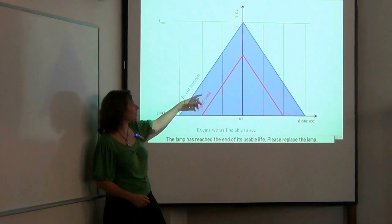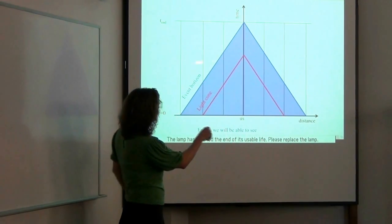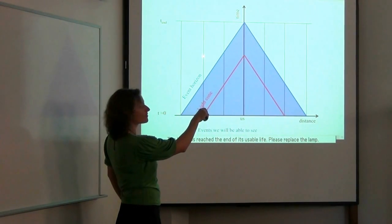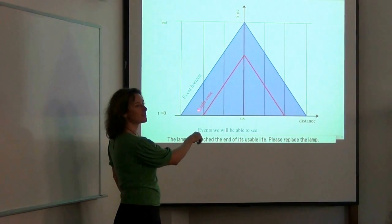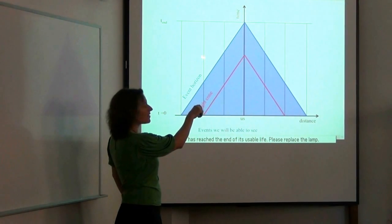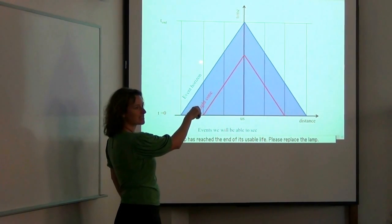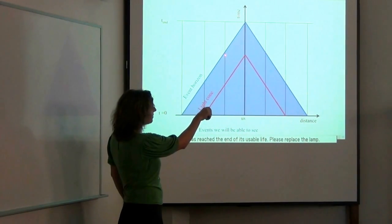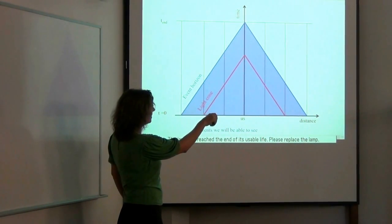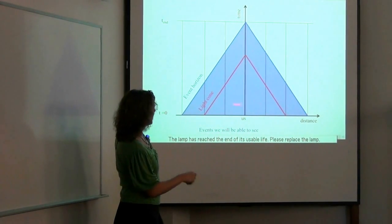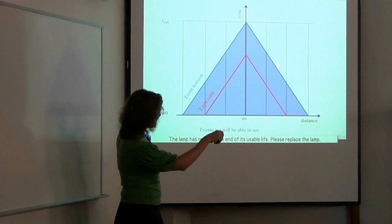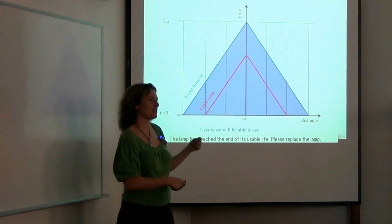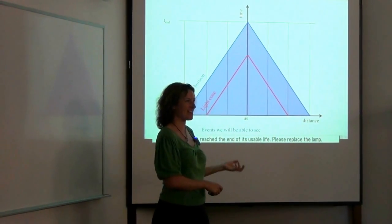So you can see some interesting things in this plot here. So this is the present day in a horizontal line here. You can see that this galaxy here, for example, we have just started to be able to see it. But it's already outside our event horizon. So we will never see it as it is at the present day. This one is within our event horizon, but will soon pass out of it. So whether you can see something now is not the same as whether you can see something as it is now.